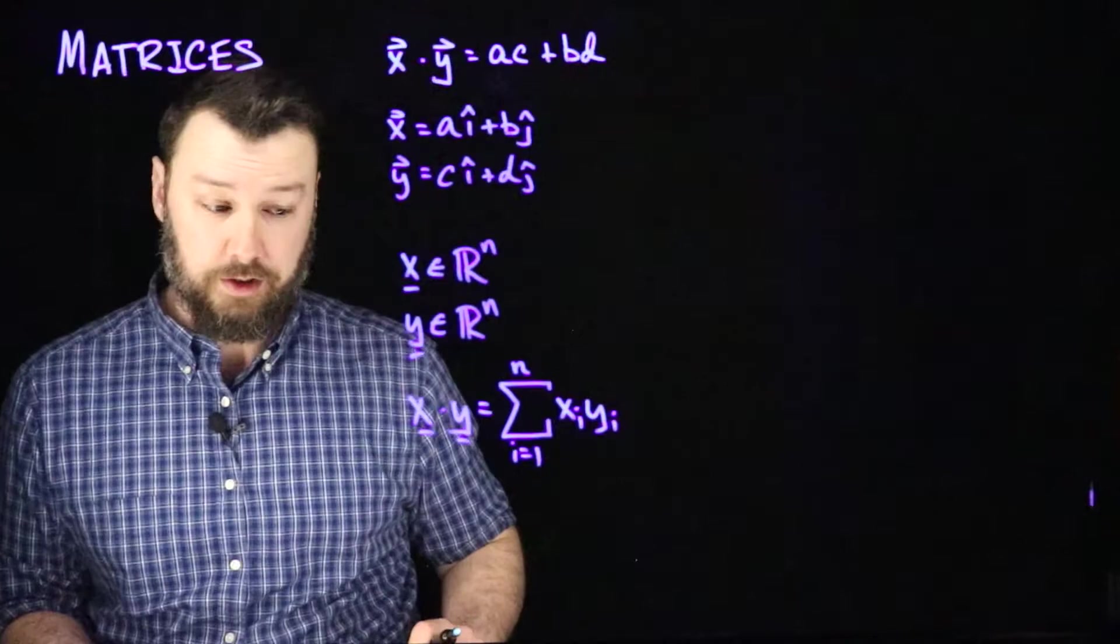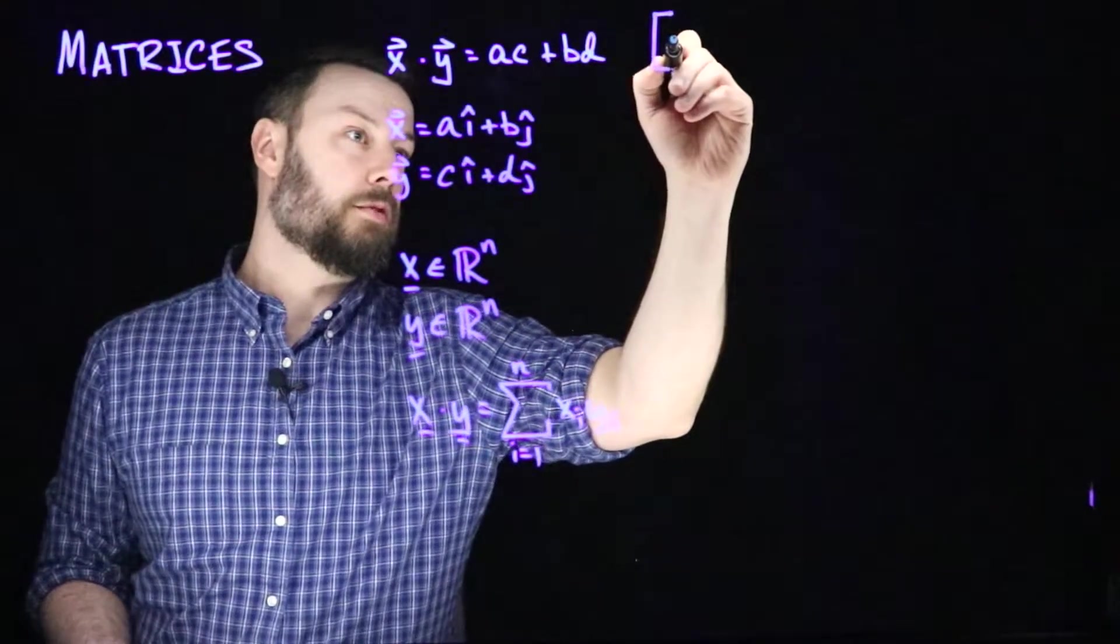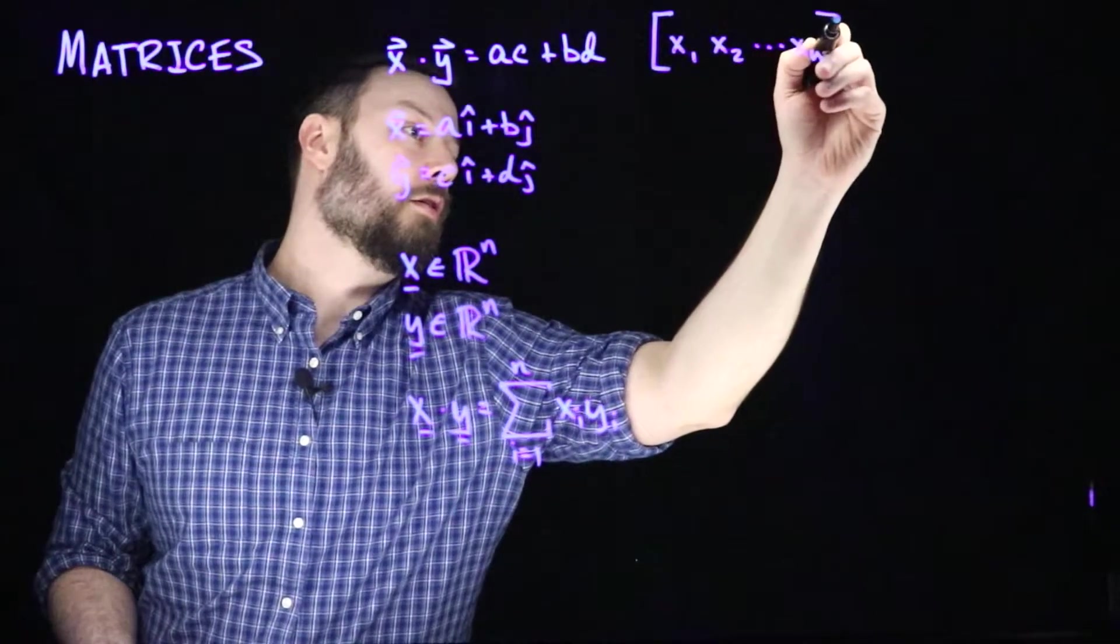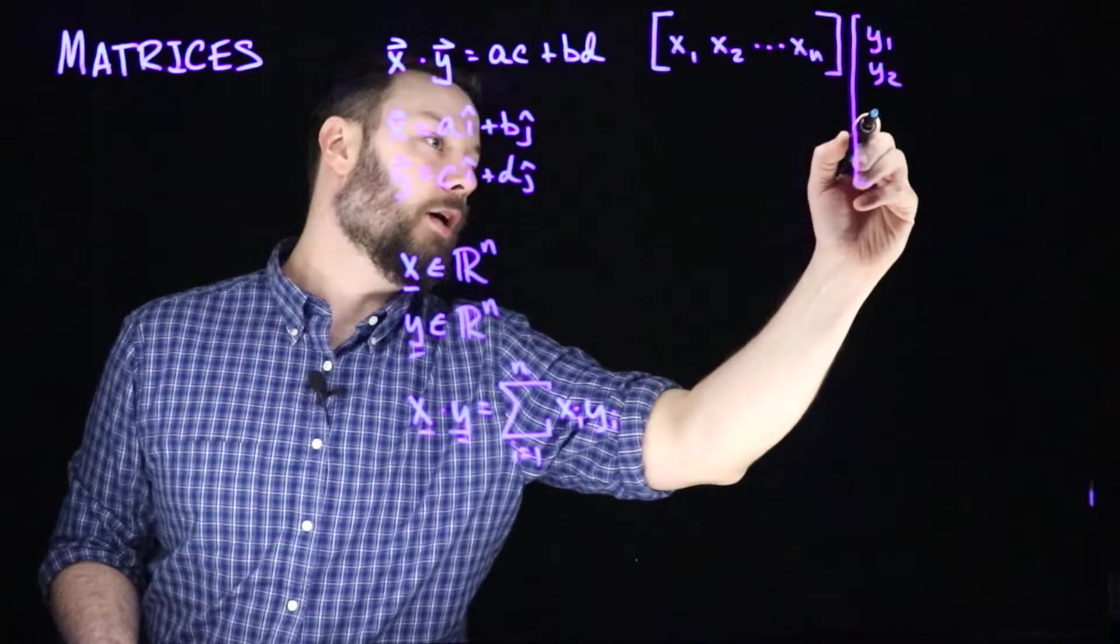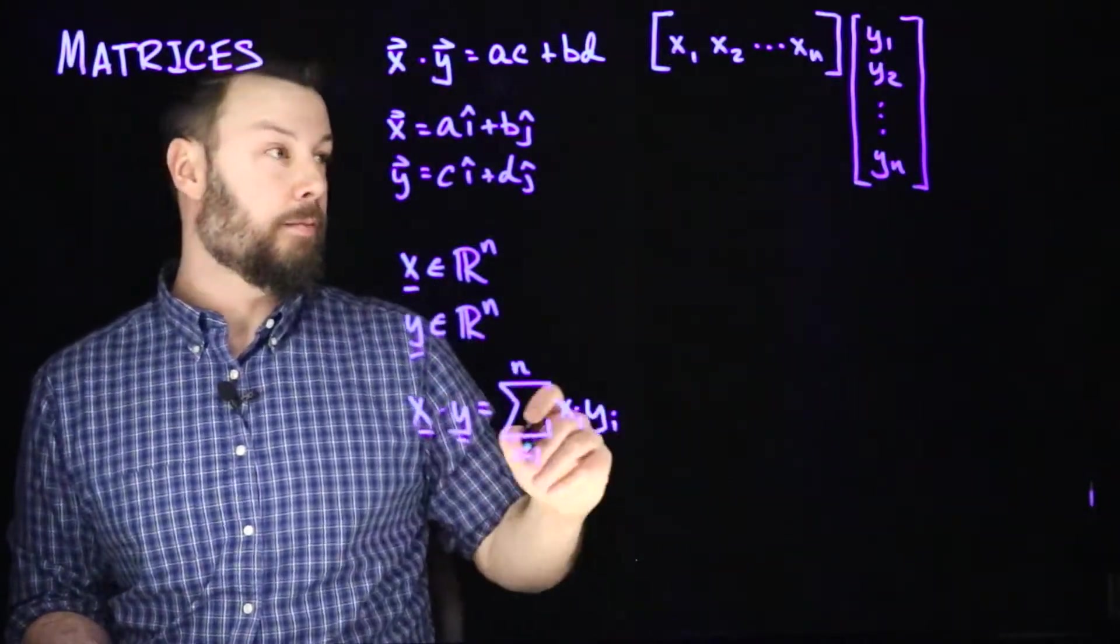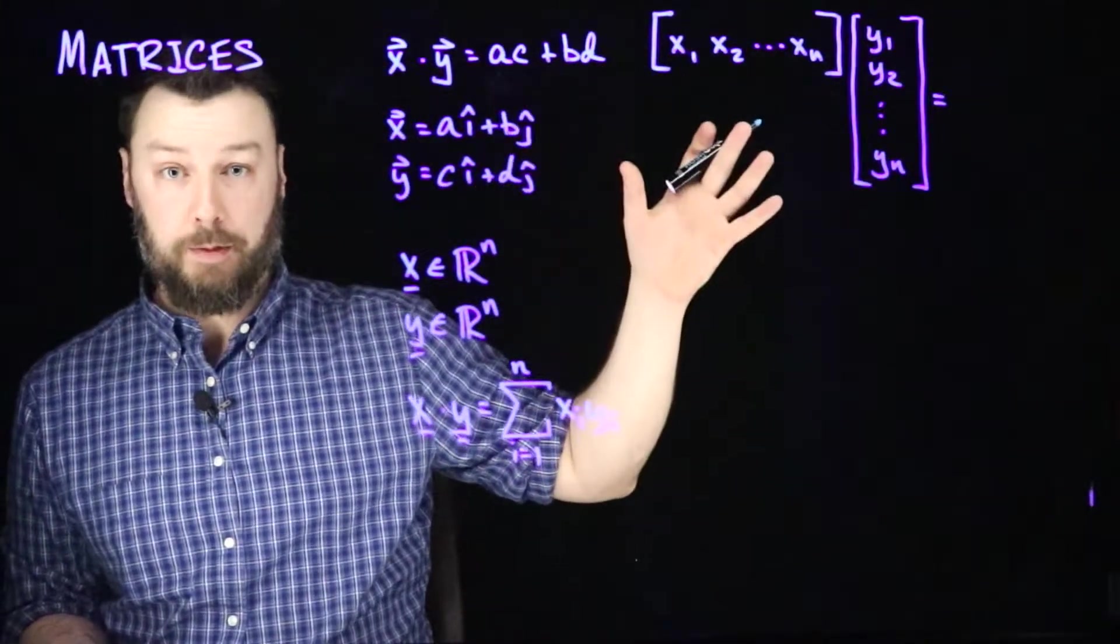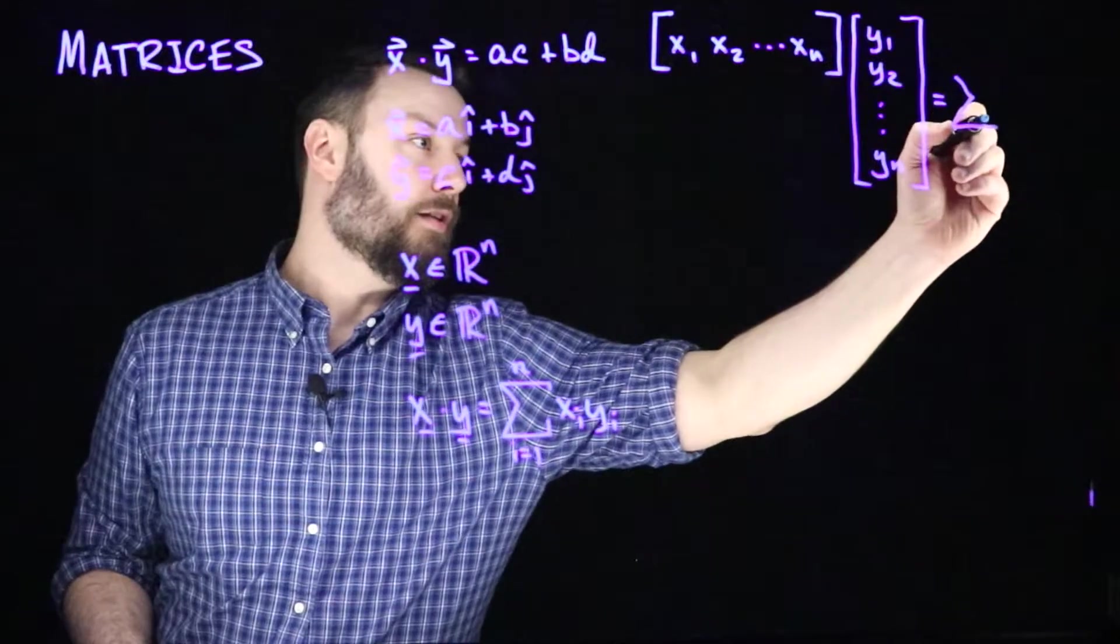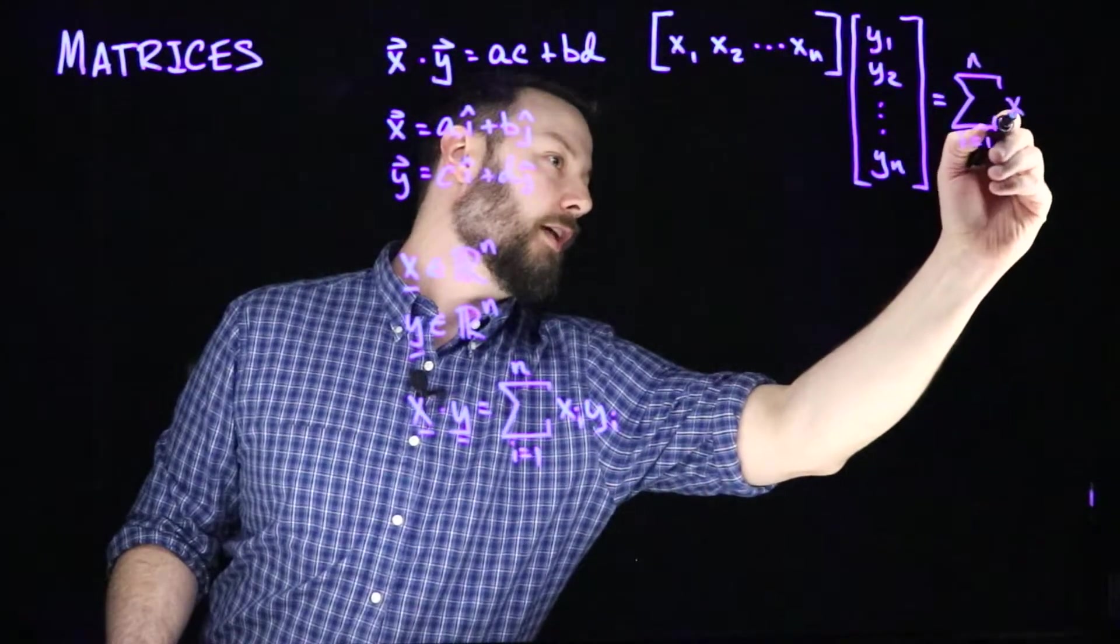Now let's take this a step further and imagine that x is a row vector and y is a column vector. Then we would have x1, x2, up to xn, and we would have y1, y2, up to yn. And this gives us a scalar that is the same as this thing we have over here. So this is a different way of writing the dot product of these two things, again the same as the sum from i equals 1 up to n of xi yi.